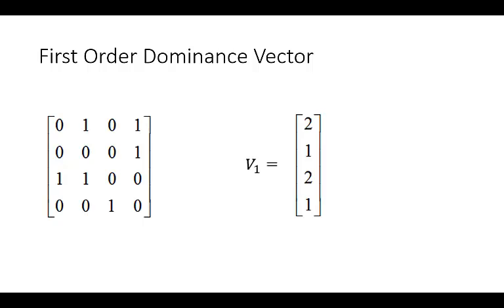So from our first order dominance matrix, we can arrive at a first order dominance vector V1 simply by adding the elements in each row. So 1 plus 1 is 2. And it's easy to interpret. This 2 just means that team A defeats 2 of the other teams. This 1 means that team B defeats 1 of the other teams.